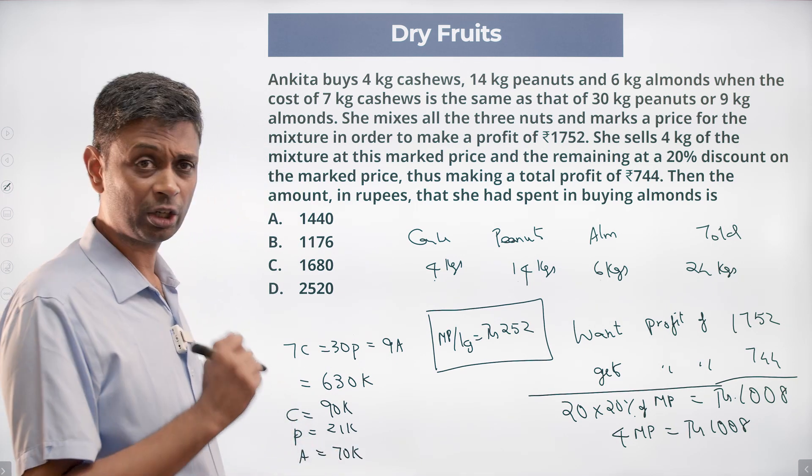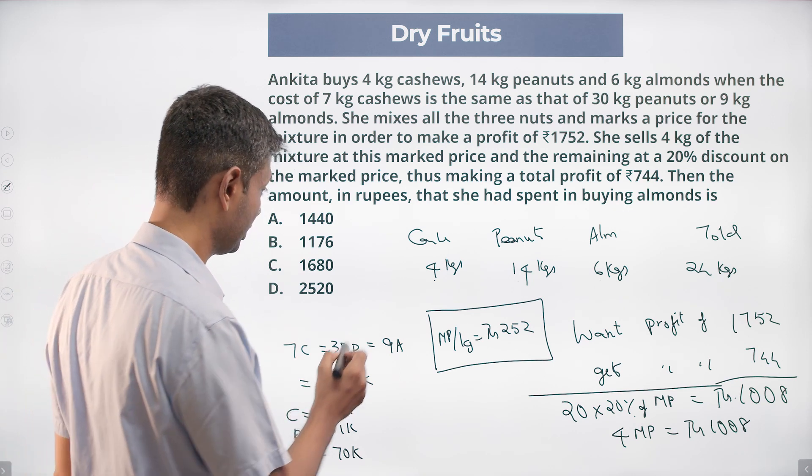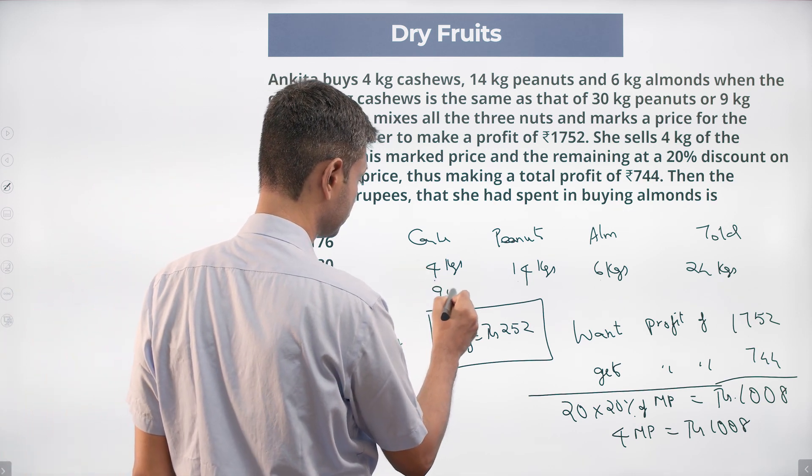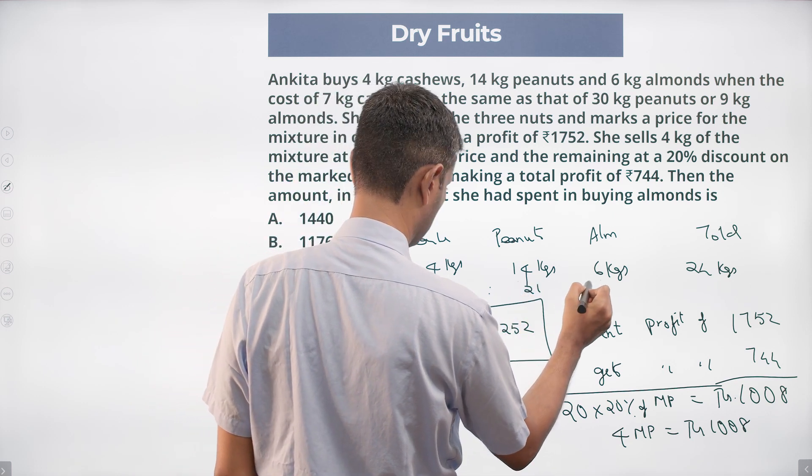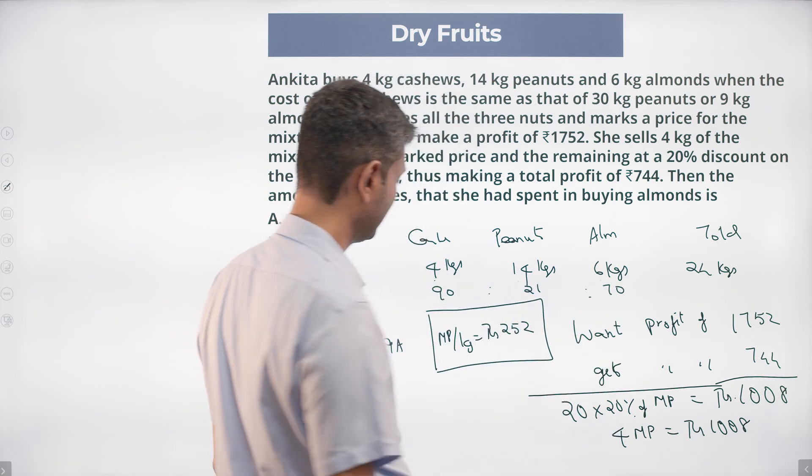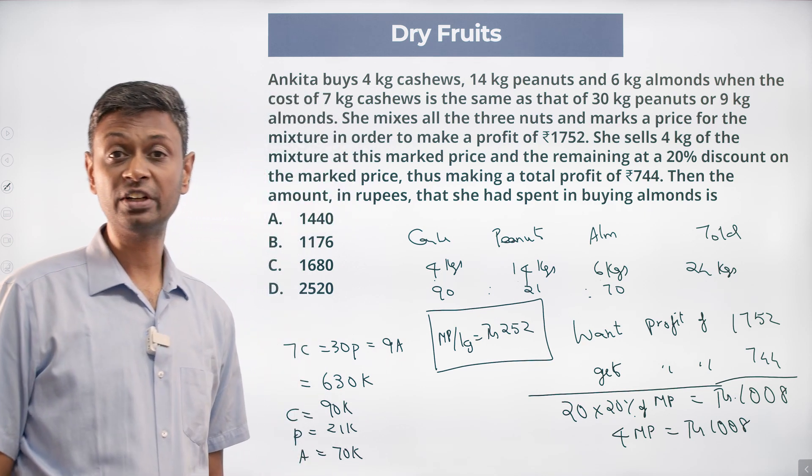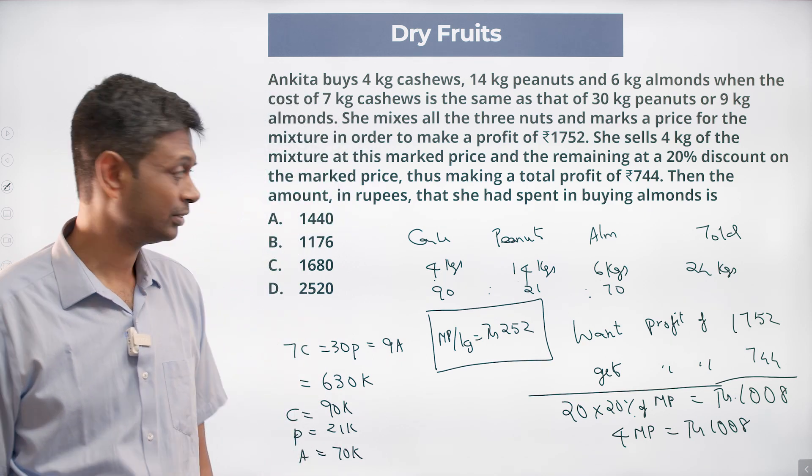The per unit pricing is in the ratio 90 is to 21 is to 70. 90K, 21K, 70K. That's the per unit pricing.